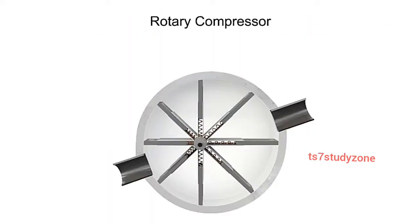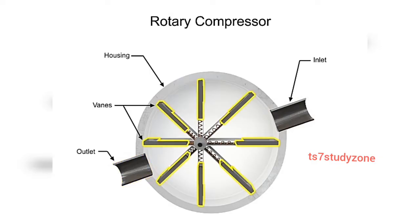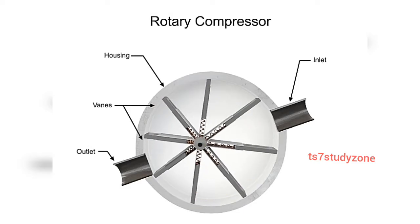Made with vanes or impellers, these types of compressors are called rotary compressors. Rotary compressors typically consist of a cylindrical housing with adjustable rotary vanes, an inlet, and an outlet. The vanes are on an off-center driveshaft.